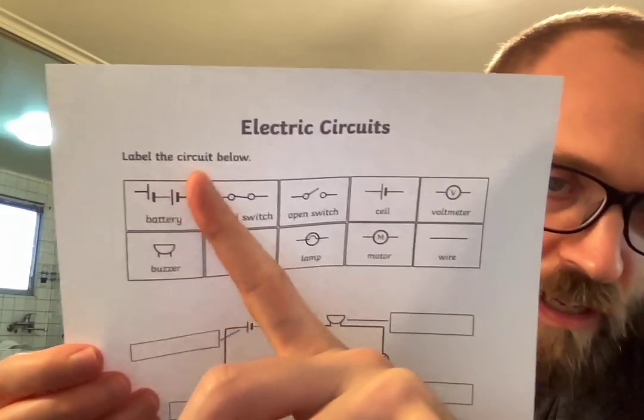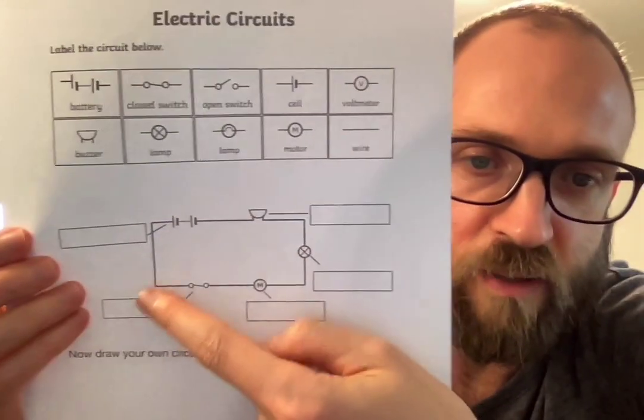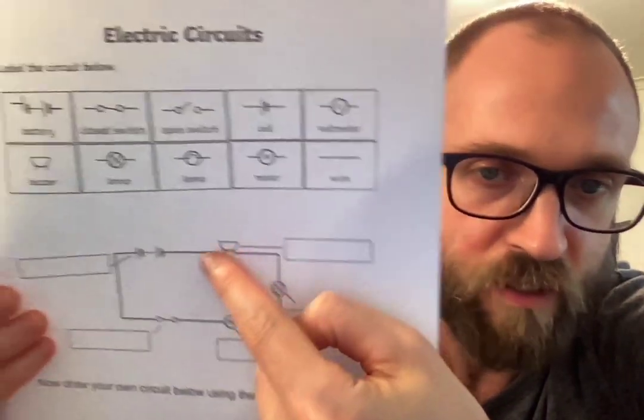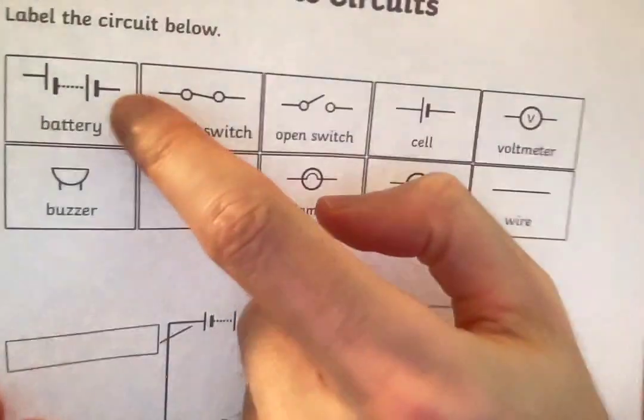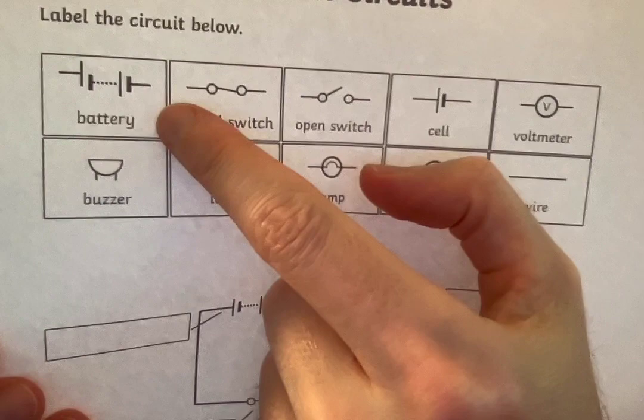We need to label the circuit below. Now sometimes when we want to draw a circuit we can use these little pictures like this. It doesn't look like a real battery, this is called a symbol. This is a symbol for a battery.